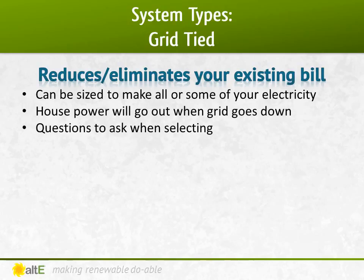The nice thing about a grid-tied system is that it will reduce your electric bill by making some of the power you use. You don't need to make all of your power, although you can if you want to and have the space and budget to do so. But most people just get a system big enough to reduce their bill, but not eliminate it.